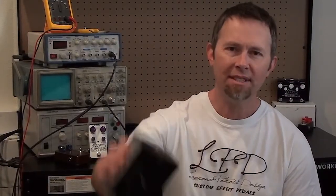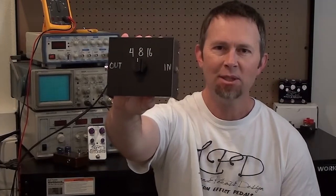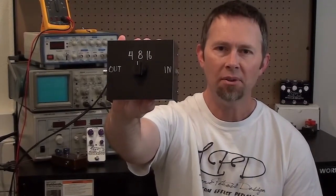Hey y'all, today we're gonna have a look inside this thing. This is a load box, also known as a dummy load. These are used during the repair of amplifiers to provide a load for the output. They're also used for silent recording in conjunction with a DI box.